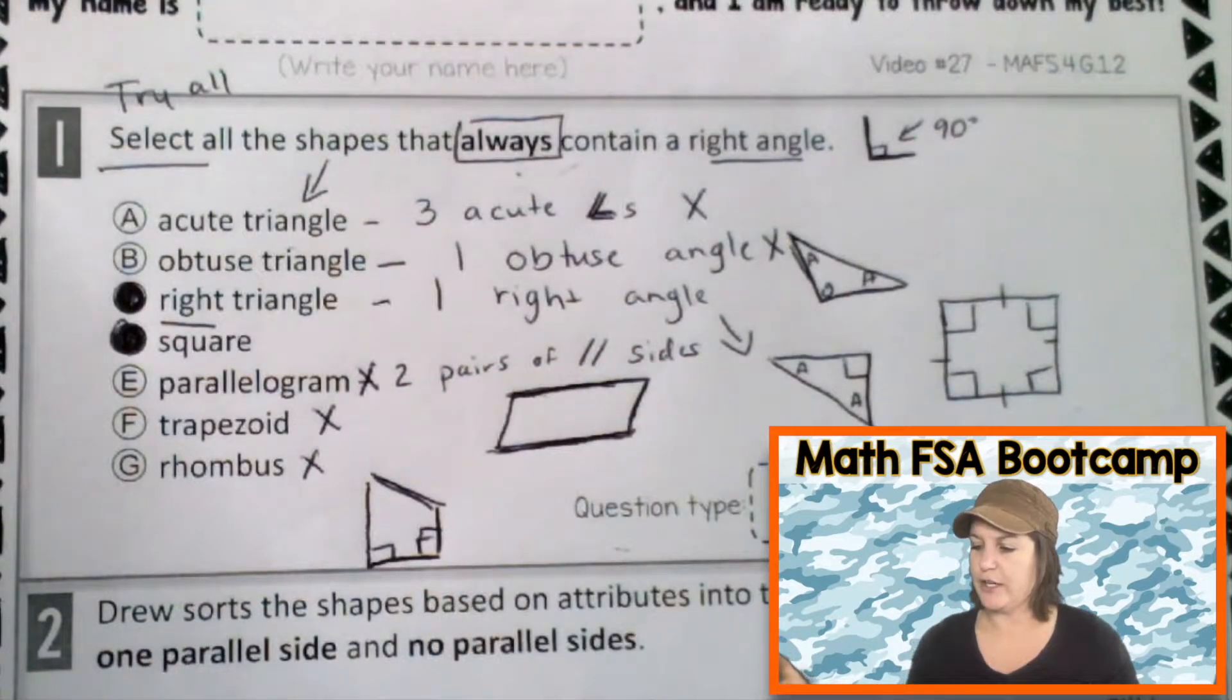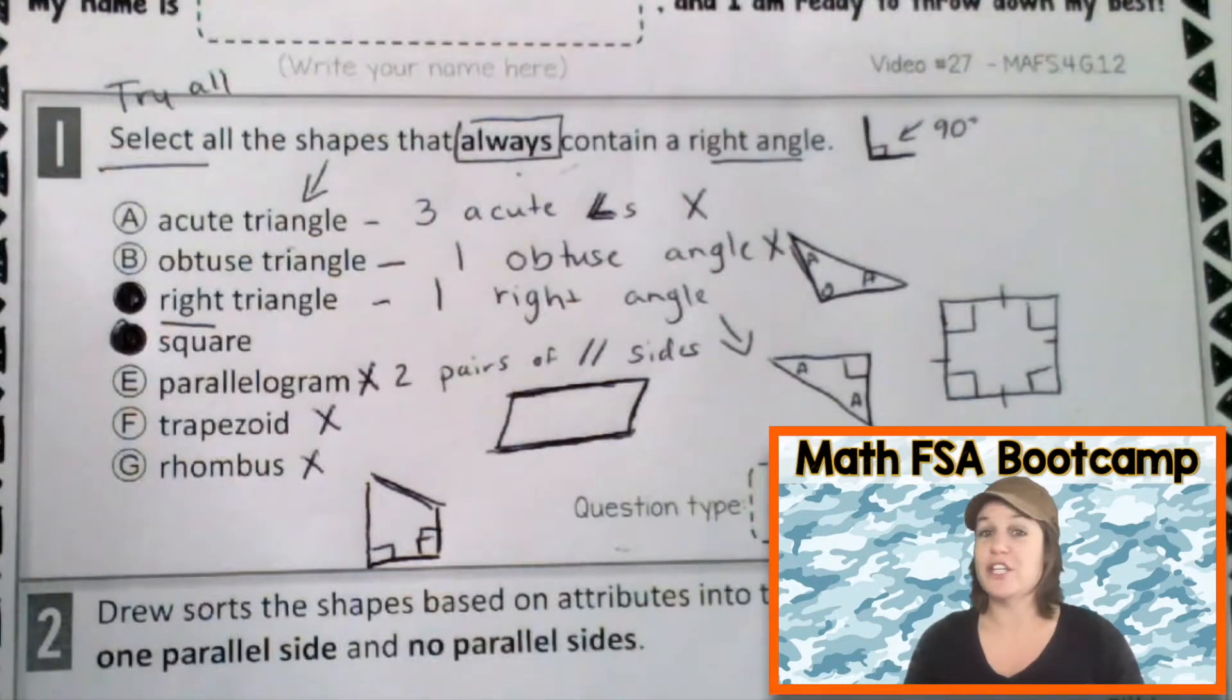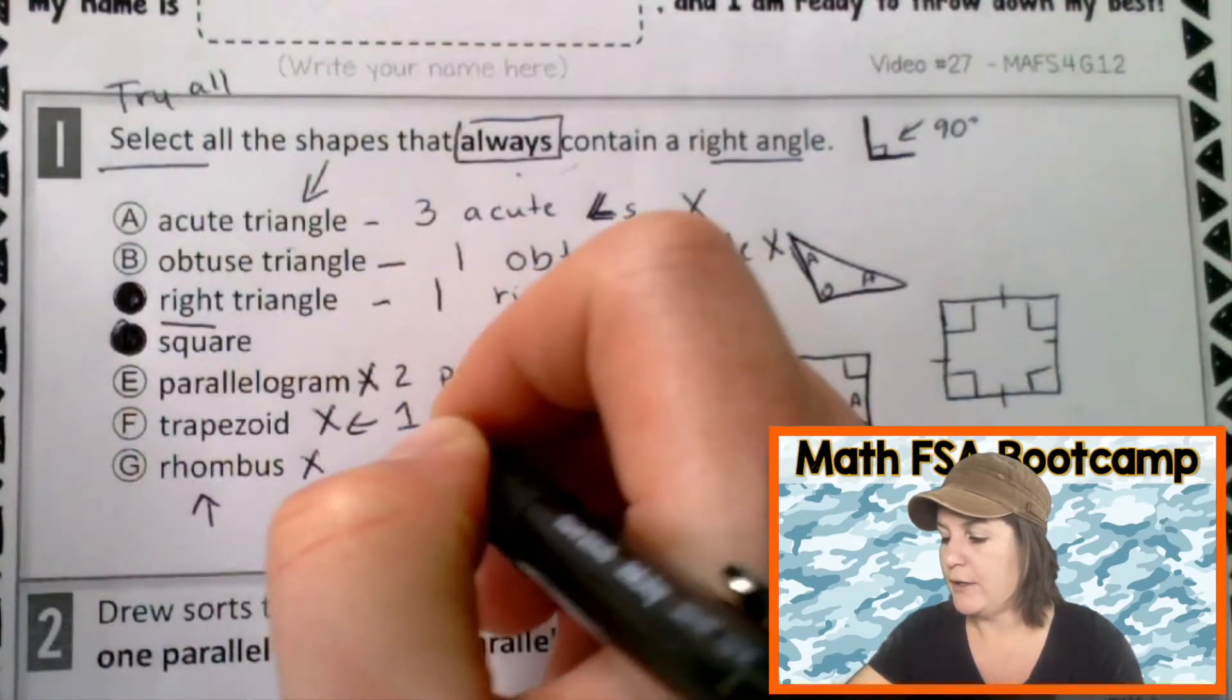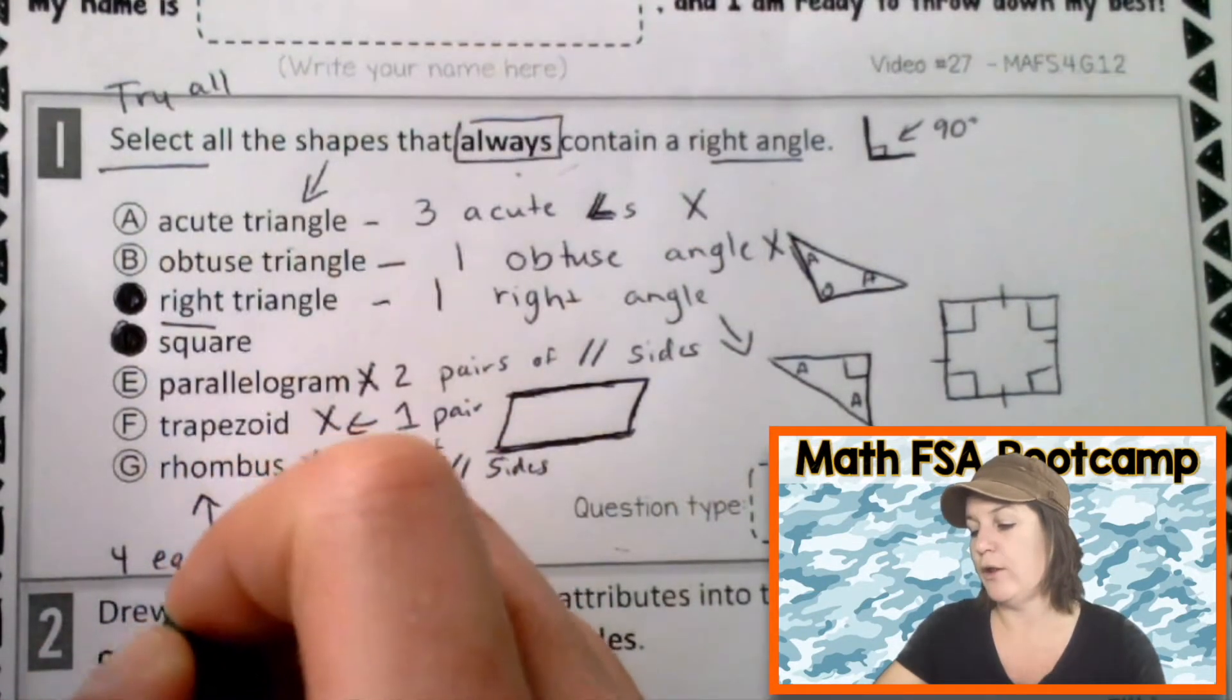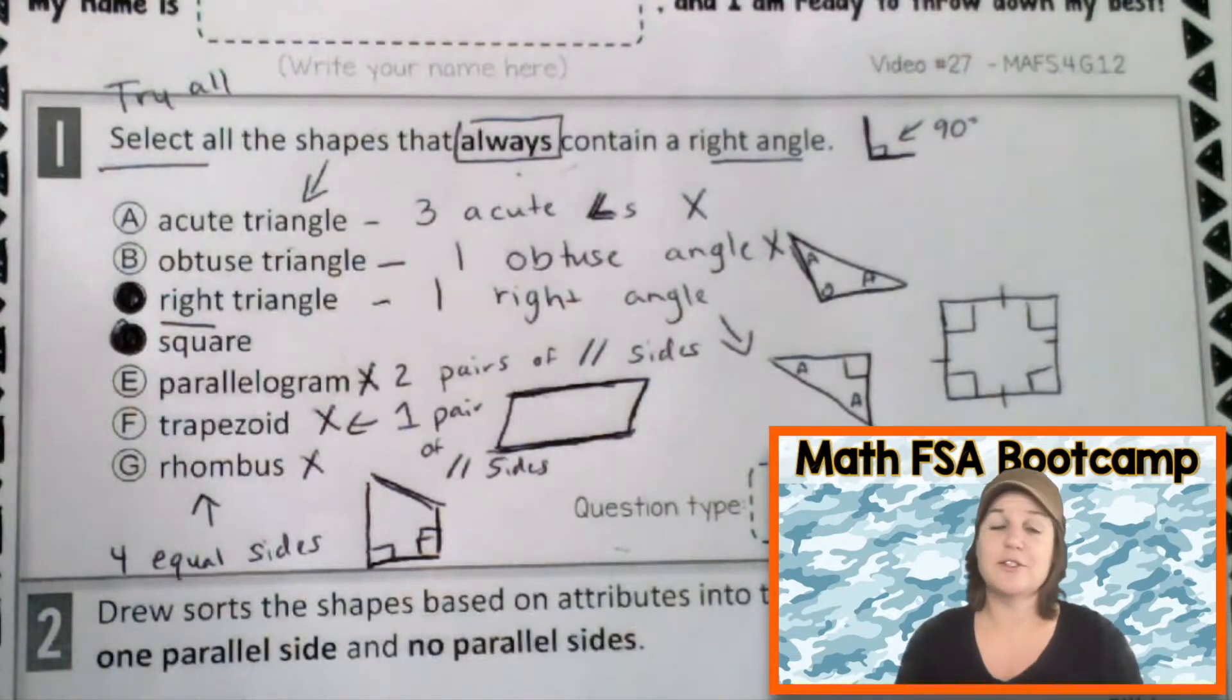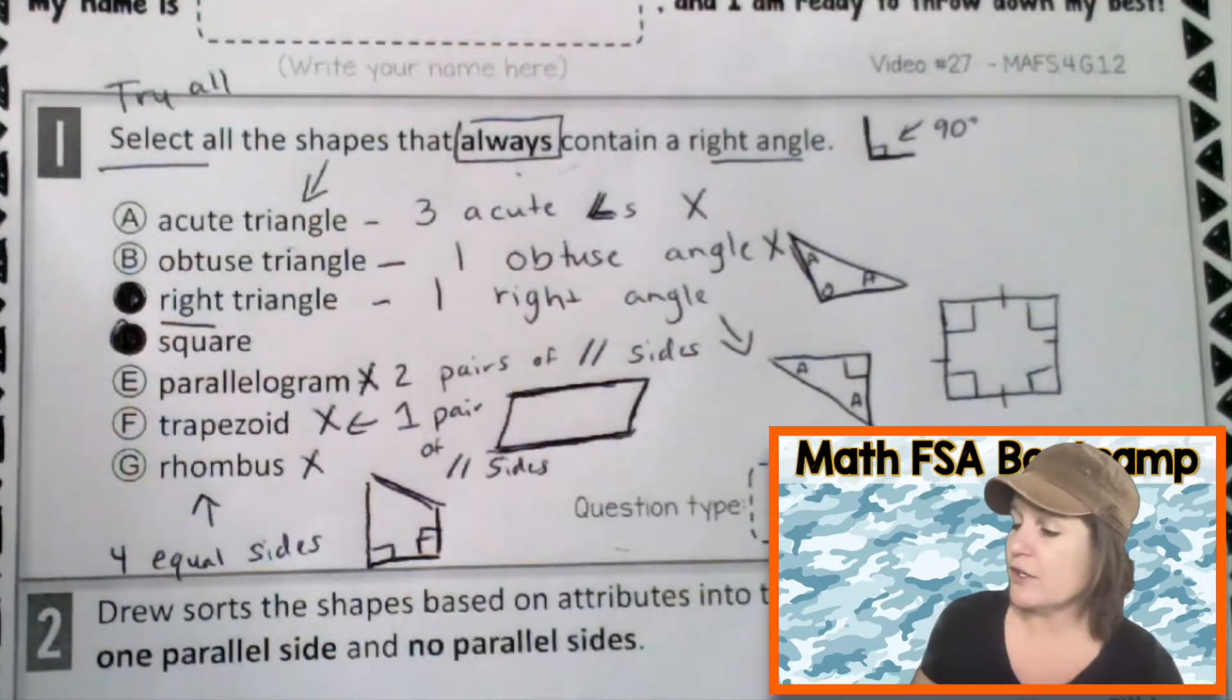Your answers are, did I mark all of them? Yes. C and D are the correct answers for number one. Go ahead and make any adjustments that you need to make. Actually, let me write this too, just so you have this. Trapezoid, one pair of parallel sides. And a rhombus is four equal or the fancy word would be congruent sides. If you need to make any adjustments to number one, take the time to do that now. You can do that by pausing the video and then just press play when you're ready for number two. But I'm ready, so I'm going to keep on going. If you need to pause, go ahead.